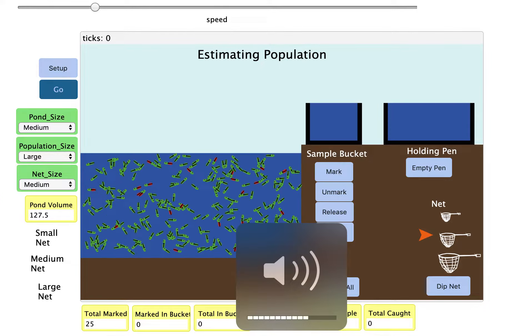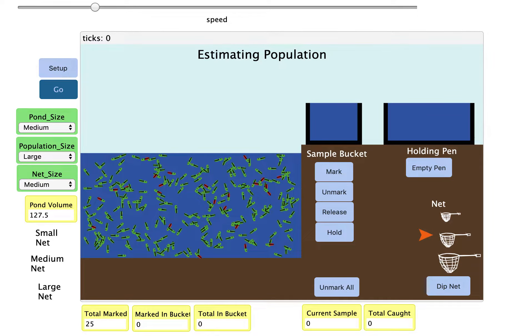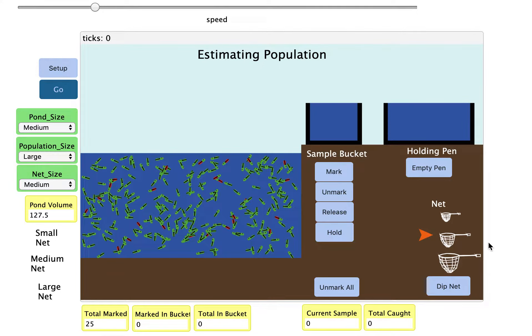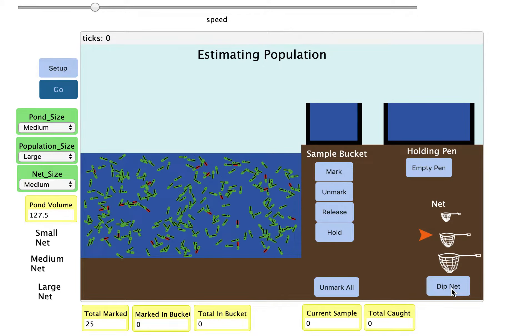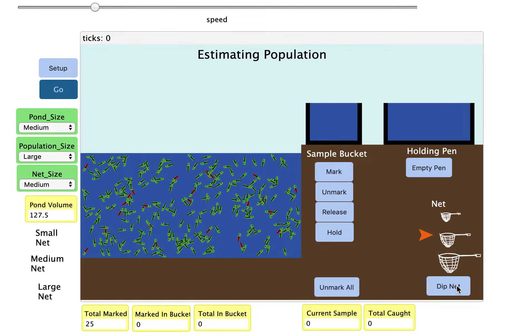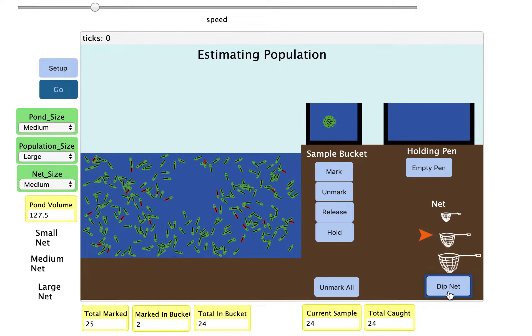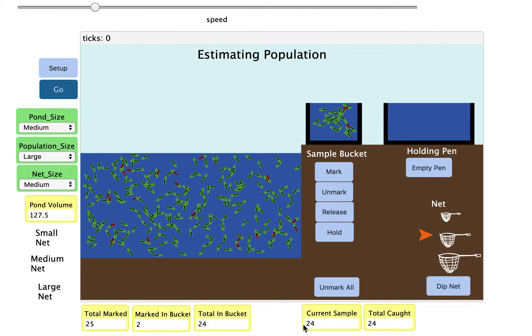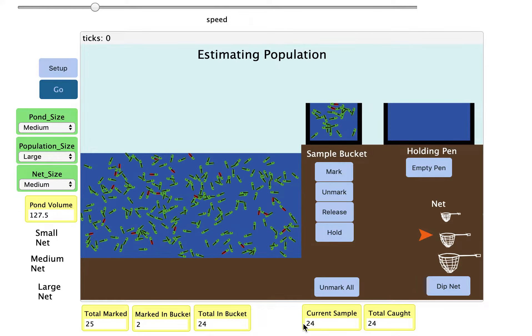Let me show you. I'm going to dip my net now. Do you see my current sample is 24? That number down here tells me I have less than 30 fish in my sample.